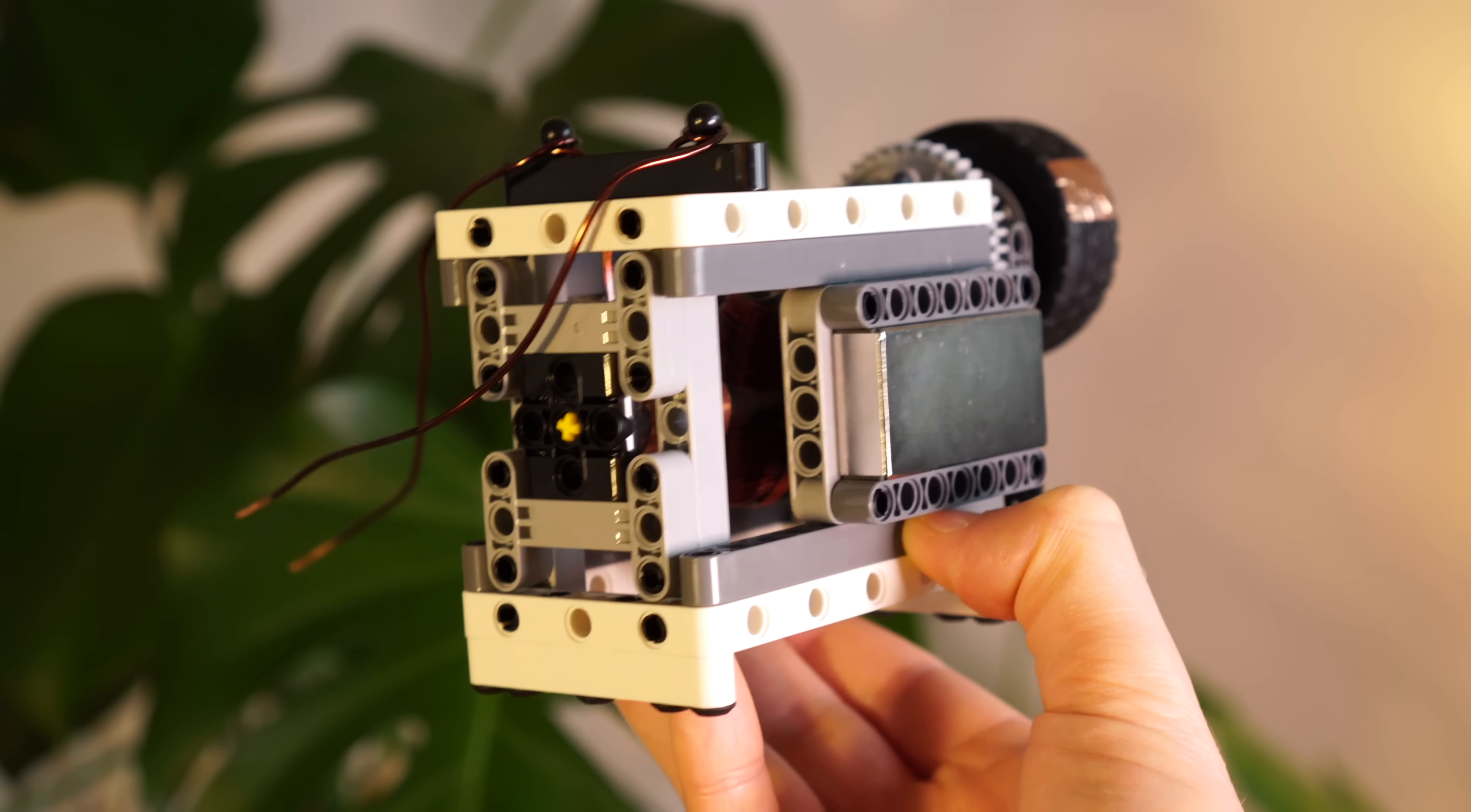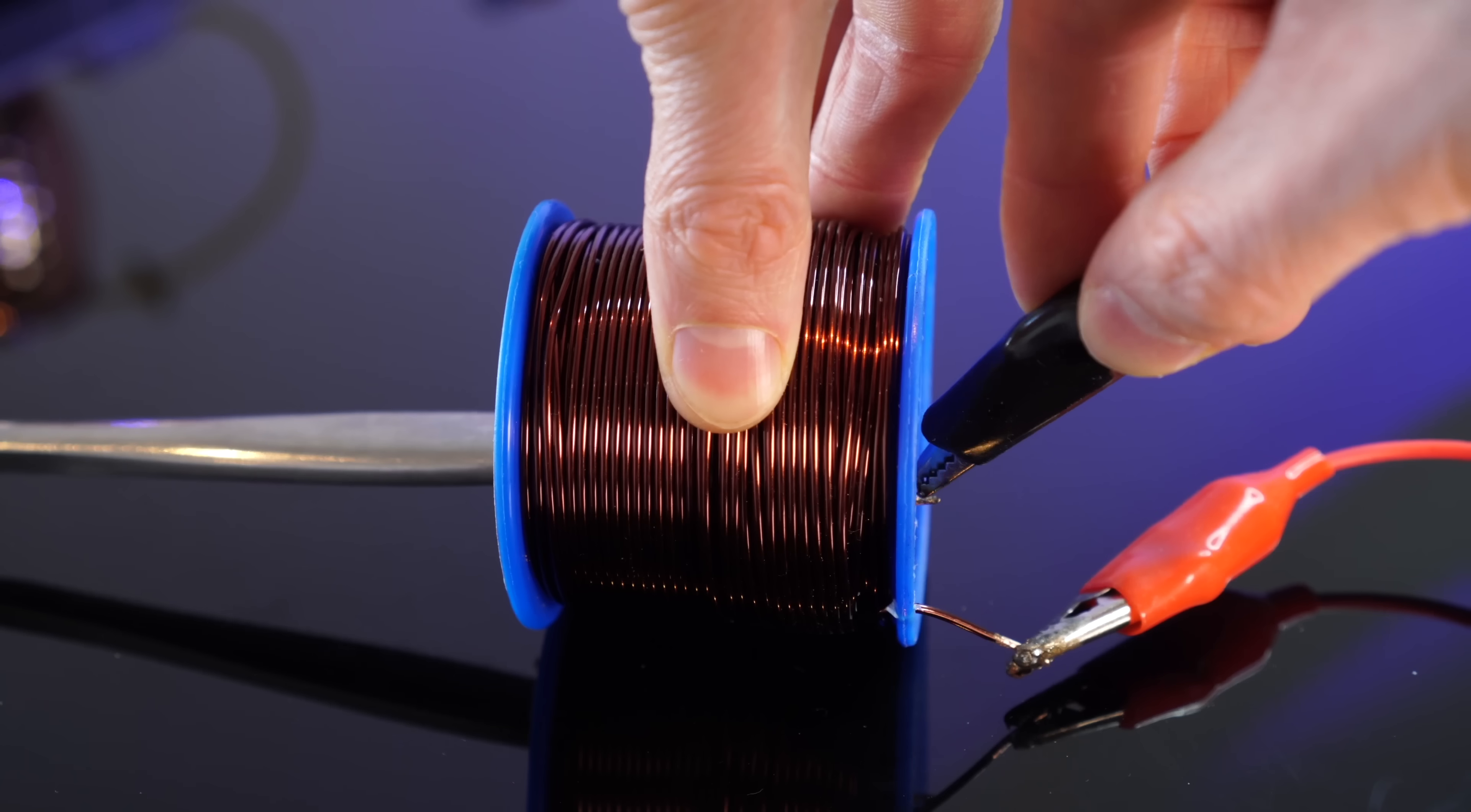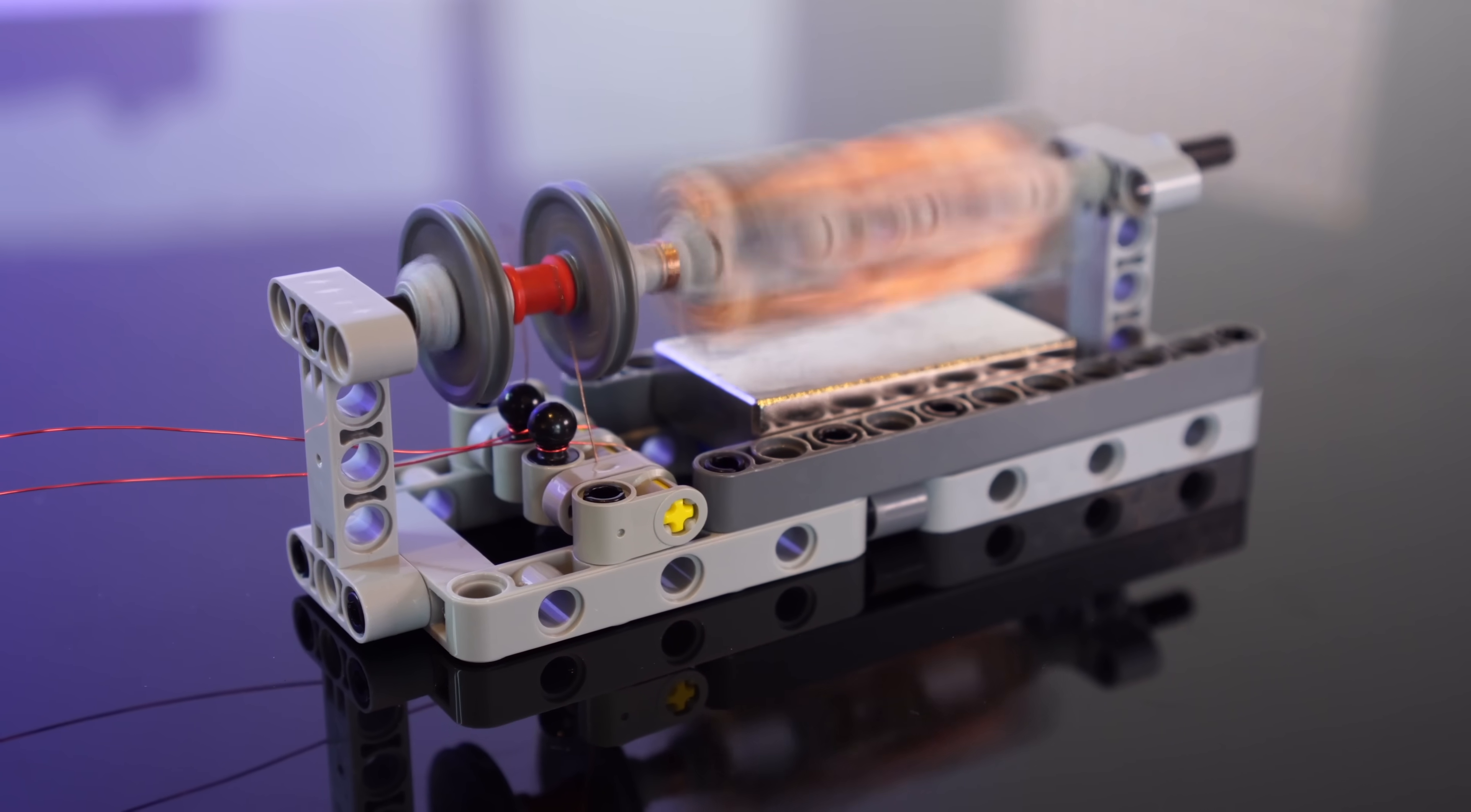So rather than wrecking all of my Lego motors, let's build one from scratch. Now I'm sure you've all seen what happens when you chuck current through loops of wire. You produce a magnetic field and we use this principle previously to make this little motor.